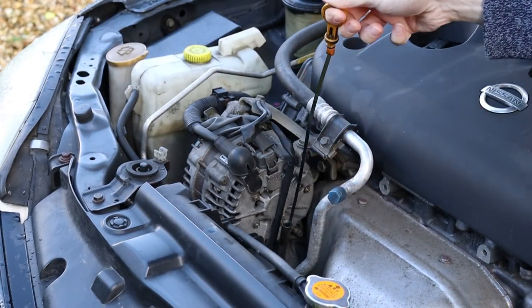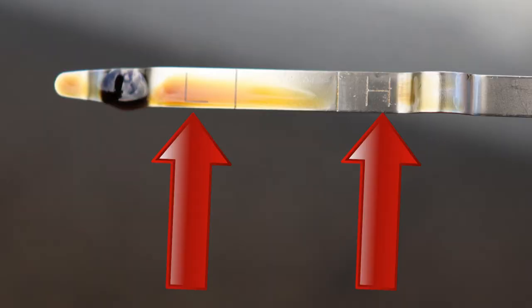Now, remove the dipstick again and this time take a reading from the high and low marks on its tip. Ideally, the oil should be at or close to maximum.